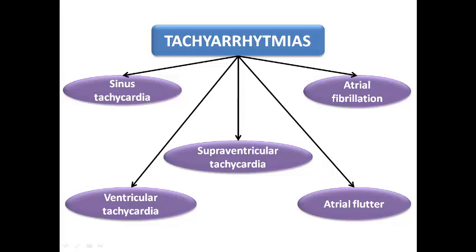Now, for the classification of tachyarrhythmias by clinical presentation: we have sinus tachycardia, ventricular tachycardia, supraventricular tachycardia, atrial flutter, and atrial fibrillation. We need a scheme to classify them in an organized way to deal with ECG interpretation precisely. When you see a patient with tachycardia — heart rate above 100 beats per minute — we can divide them into narrow complex tachycardia (QRS duration less than 120 ms) and wide complex tachycardia (QRS duration ≥ 120 ms).